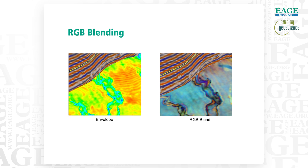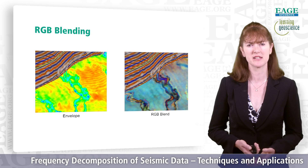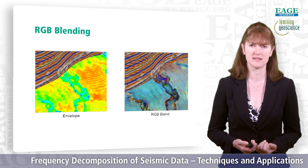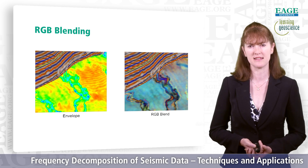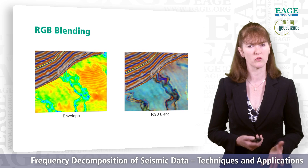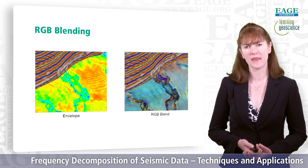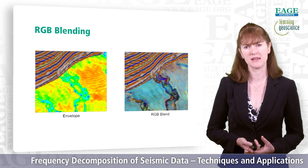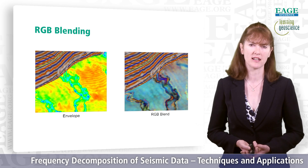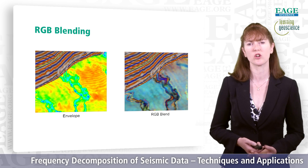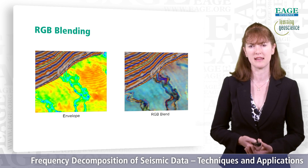Zooming in on the top of those channels again, we can see the different facies being highlighted by the different frequency characteristics. The different colors show up those different facies — the Thalweg is more of a blue color, and the point bars are more of a reddish-brown. The channel on the left shows more variable, changing colors, indicating heterogeneity within that channel — maybe changes in thickness or changes in lithology within that channel system.